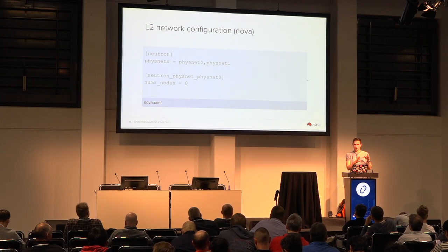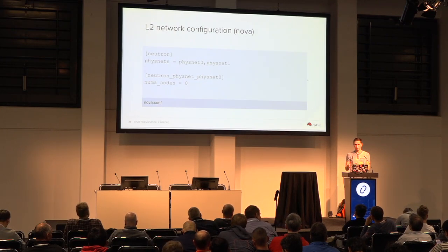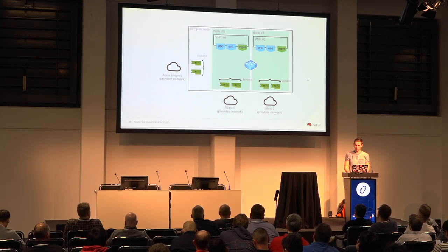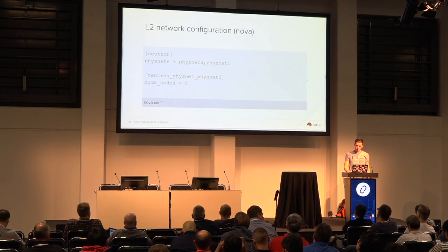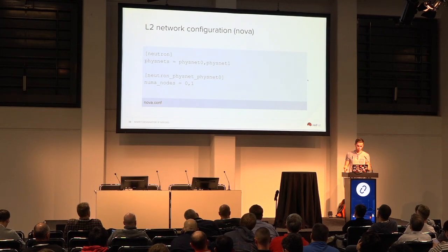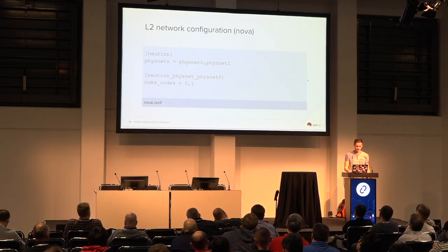This moves the configuration from something that has to happen at runtime to something you can configure as part of your deployment tooling. An interesting point that came up is that in real productions, most people tend to use NIC bonding to make sure they have active-passive failover. So we made sure that the NUMA nodes configuration option was able to be a list, so if you had multiple NICs connected on different NUMA nodes you would be able to handle that.